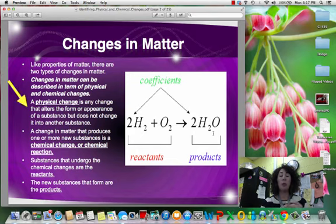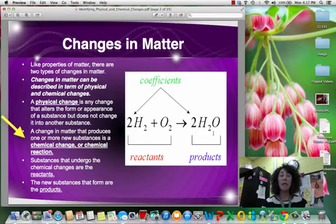We know that when we're talking about changes in matter, they can be physical or chemical. Physical, we're altering the appearance. We are not changing the identity of the substance. Chemical, we are changing the identity of the substance. We are combining things and we are getting something that is completely new and different.